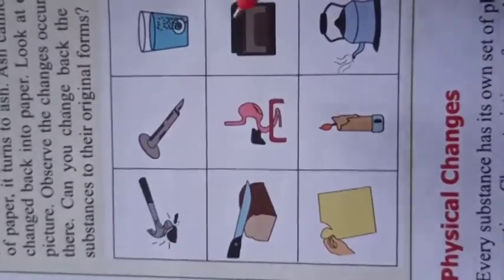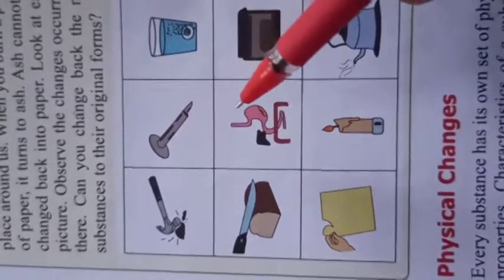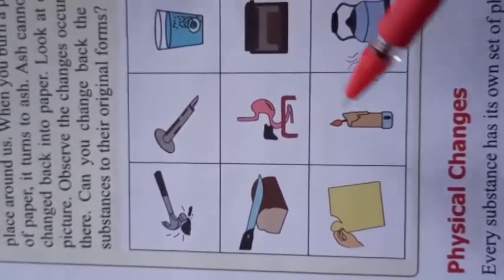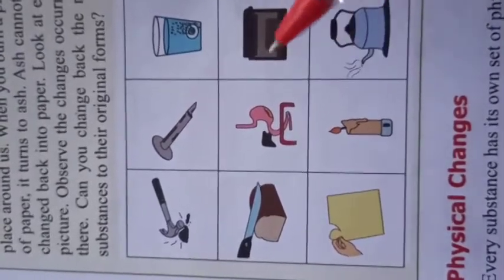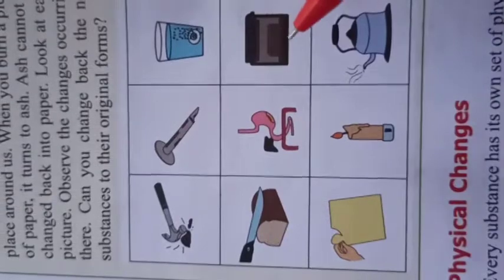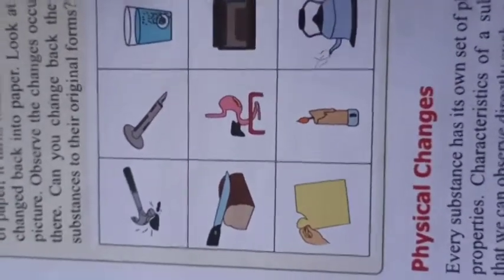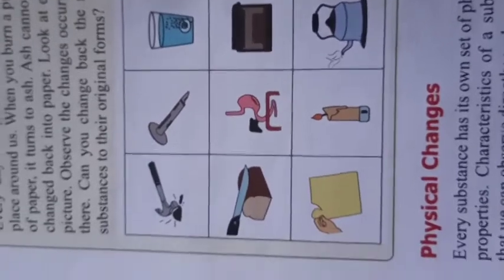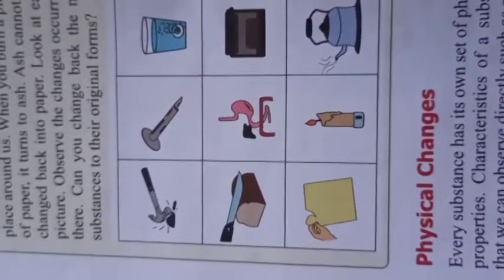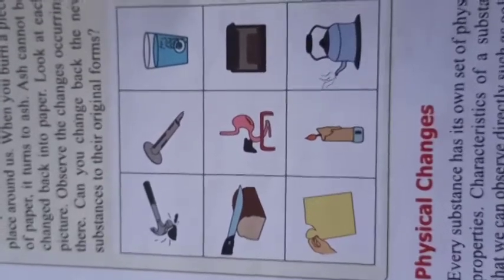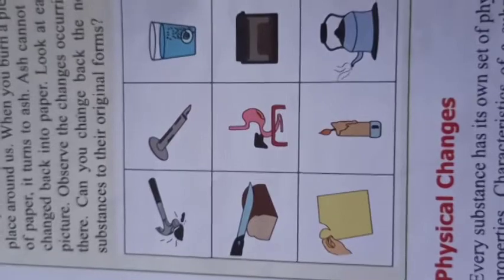So children, we can conclude from this part that some of the changes can turn back, but many changes are like that which can't be turned back to their original form. You can also see so many changes around you in your daily life where some changes, once they happen, will not change back into their original form.